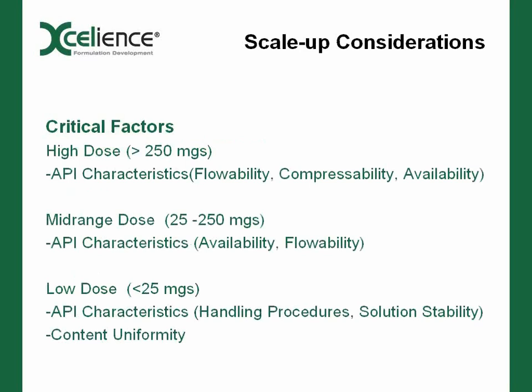Looking at critical factors based on dose level: for a high dose active, greater than roughly 250 milligrams — and again these are not hard and fast rules, just rough guidelines — we need to be very concerned about flowability, compressibility, and availability of the API. For a mid-range dose of approximately 25 to 250 milligrams, availability may not be as much of a problem depending on where you fall in that range, but flowability is still a potential concern.